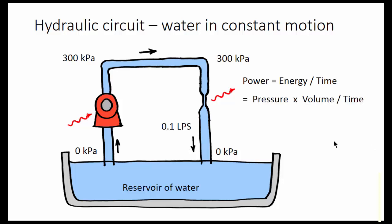How much is that power? Power equals energy per unit of time. That's pressure times volume per unit of time. That's the pressure times the flow rate. We have 300 kilopascals pressure, 0.1 liter per second flow rate, that equals 30 watts. So we have 30 watts of power coming into this pump to make it work, and 30 watts of heat energy coming out of this resistor.